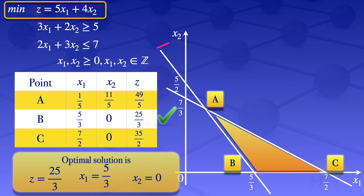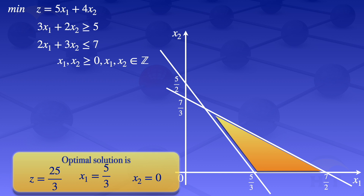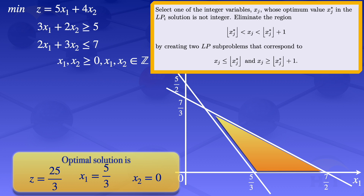What we have here is the optimal solution of the linear programming problem, obtained when we relaxed the integer constraint. But we require x1 and x2 to be integers, so we now go to the next step using the branch and bound method to get integer values. We select a variable whose optimum value in the LP solution is not integer — in this case it is x1, whose value 5 over 3 is not an integer.